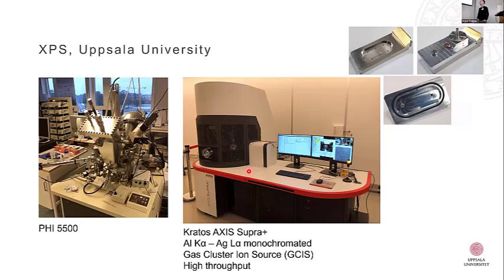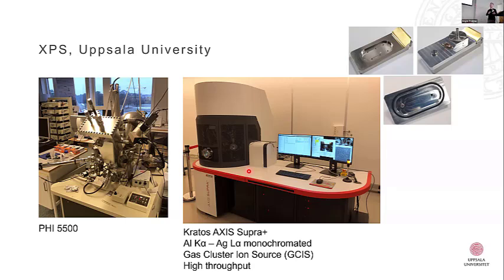At Uppsala in our battery group we have a couple of instruments — a very old 5500, and a newer Kratos Axis SuperNova that we've had for a few years. This one is nice because we have the dual anode — aluminium and silver — which is monochromated. With almost 3000 eV we can perhaps call this a partially HAXPES instrument. It also has a gas cluster ion source, which is interesting for sputter depth profiling of more sensitive materials such as polymers without chemically damaging the material. It's quite nice for high-throughput automated measurements.